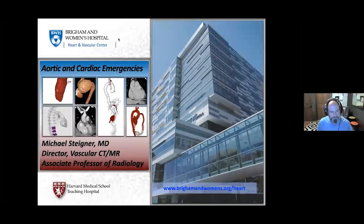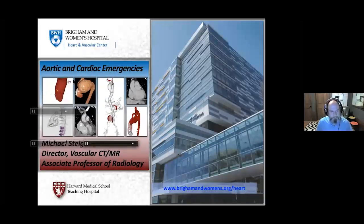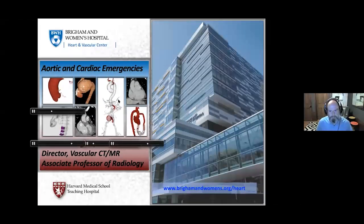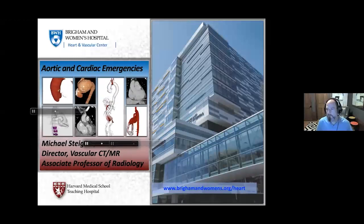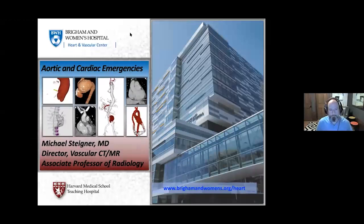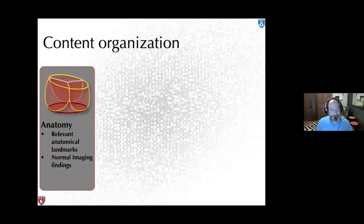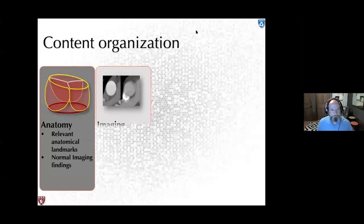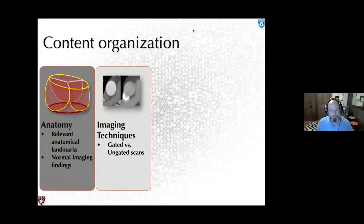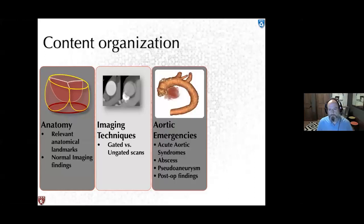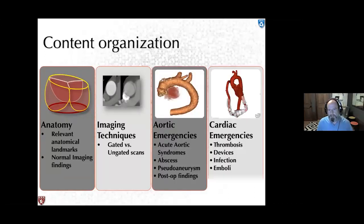I'm director of vascular CT and MRI. Here are a couple of example images. We'll start with content organization: we'll review the anatomy of the aortic root, look at different imaging techniques — gated versus ungated scans — then review specific aortic emergencies, and then cardiac emergencies as well.